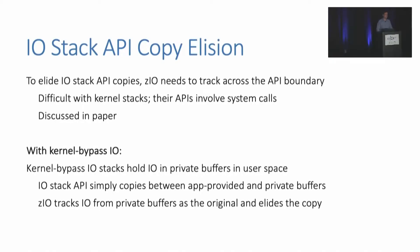That previous example explains how we eliminate in-application copies. But Zeo is also capable of eliminating I/O stack API copies. To do this, Zeo needs to track data across the API boundary. Tracking data across the API boundary is difficult with kernel stacks, as this involves system calls and going in and out of the kernel — so we do not implement this, but we discuss it in the paper. Instead, we implement integrating Zeo with kernel bypass I/O stacks. Kernel bypass I/O stacks typically hold I/O data in private user-space buffers, and we can start tracking data in these private buffers and eliminate the need to copy data at the I/O stack API.